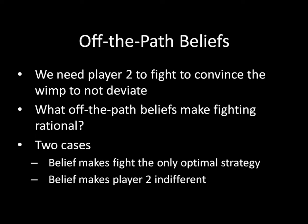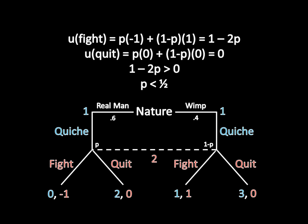There are two different ways that we can accomplish this. The first is to use a belief that makes fighting the only optimal strategy. The second is a belief that makes player two indifferent between fighting and quitting, which would still allow her to optimally fight. The first of these cases is easier, so we'll start with that. Let p be the probability that player two believes, as her posterior belief, that player one is a real man after observing quiche. Then her expected utility for fighting equals p times negative 1 plus 1 minus p times 1. Her payoff is a flat 0 for quitting. Setting those two things equal to each other and solving for p, we see that fighting is strictly better when p is less than 1/2.